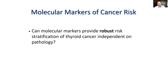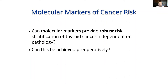But we are not talking about single anecdotal cases. The question is more general: can molecular markers provide robust and accurate risk stratification of thyroid cancer independent of pathology? And even more advanced: can this be achieved preoperatively, before the surgeon takes the patient to the operating room, to have a pretty good sense if this is going to be a low, intermediate, or high-risk cancer?